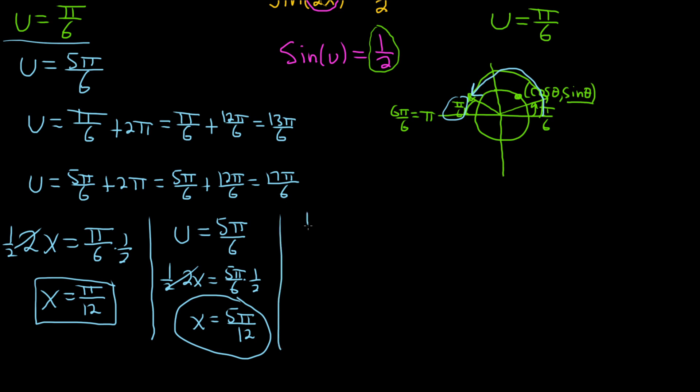The next one would be u equals 13π over 6. But again, u is 2x. So 2x is equal to 13π over 6. Then you just multiply by 1 half. Multiply by 1 half. So you get x equals 13π over 12.